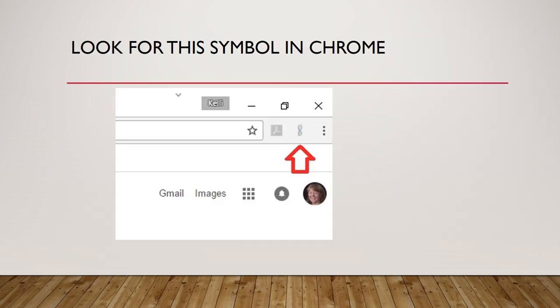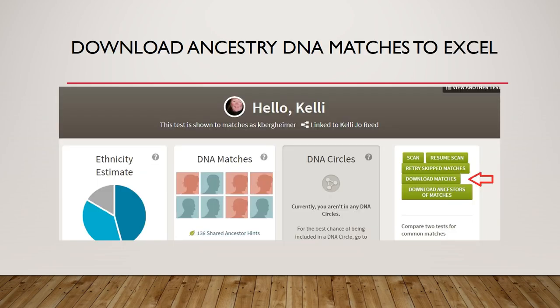What the extension adds are little green boxes on the right-hand side: scan, resume scan, retry skipped matches, download matches, and download ancestors of matches. If you manage multiple DNA profiles — your parents, children, or cousins — any kit you manage will have this functionality when opened in Chrome browser. Click on 'download matches' to generate a spreadsheet of all your Ancestry matches at that particular time. The scan could take some hours depending on your browser, network speed, and processing, but if it gets interrupted you can resume it.